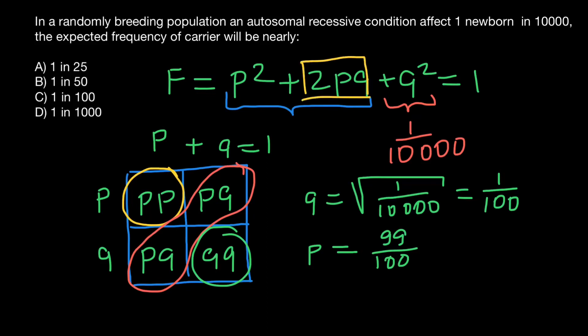So we know the frequency of P and Q. Frequency of the heterozygous genotype, which is 2PQ...